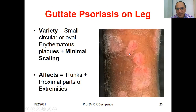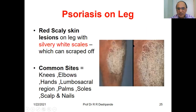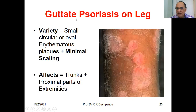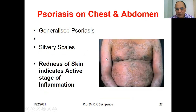Guttate psoriasis on the leg — these are small circular or oval erythematous plaques, red-colored, with minimal scaling. Compare with the previous type which had a lot of scaling — this has very few scales. It affects the trunk and proximal parts of the extremities. This is called guttate psoriasis. Psoriasis on the chest and abdomen — generalized psoriasis with silvery scales. Redness of the skin indicates the active stage of inflammation.